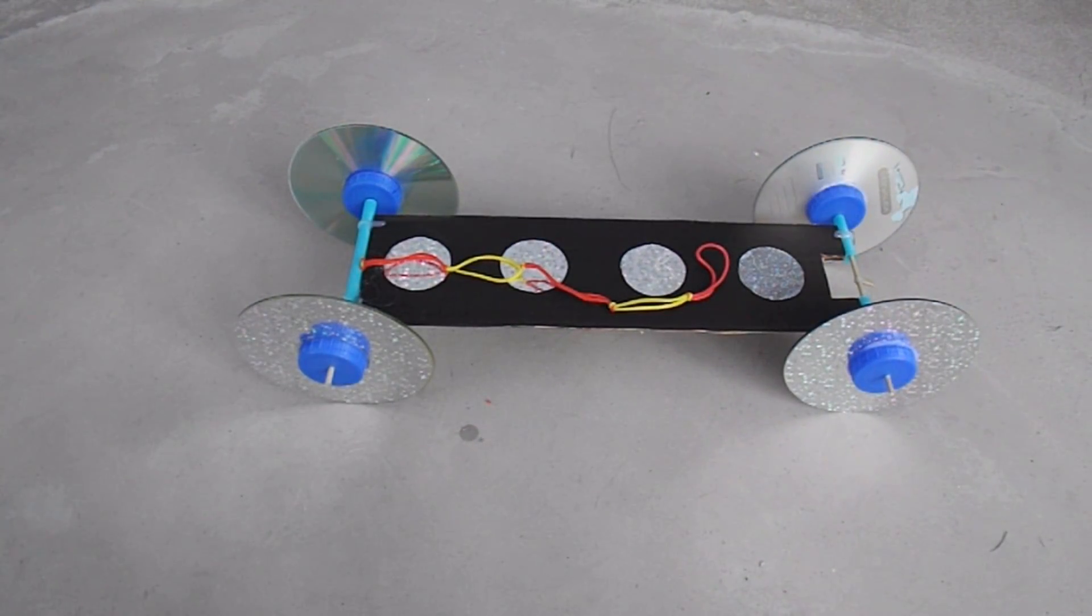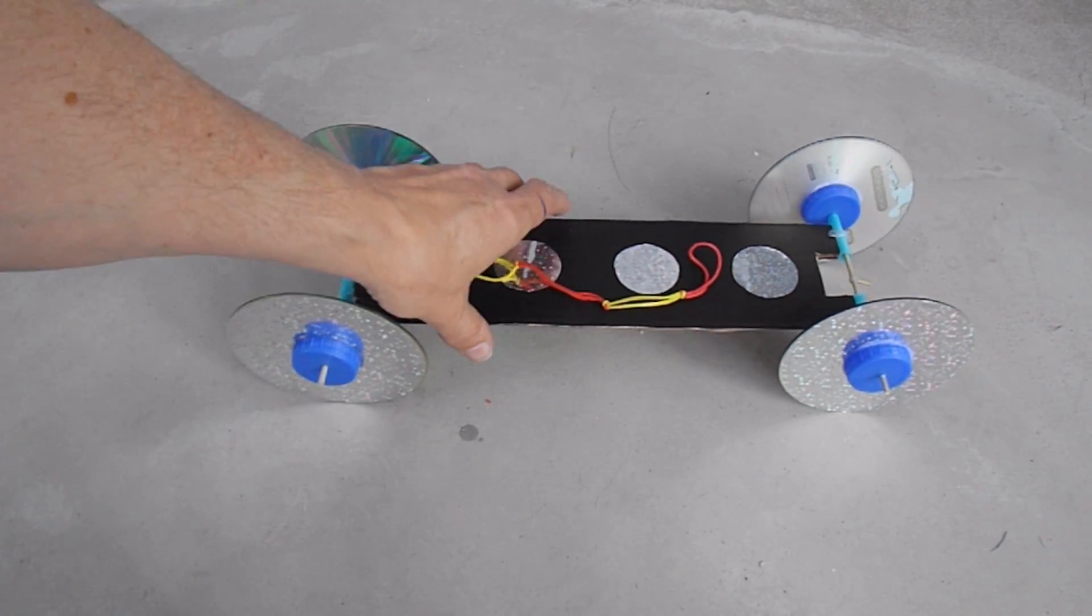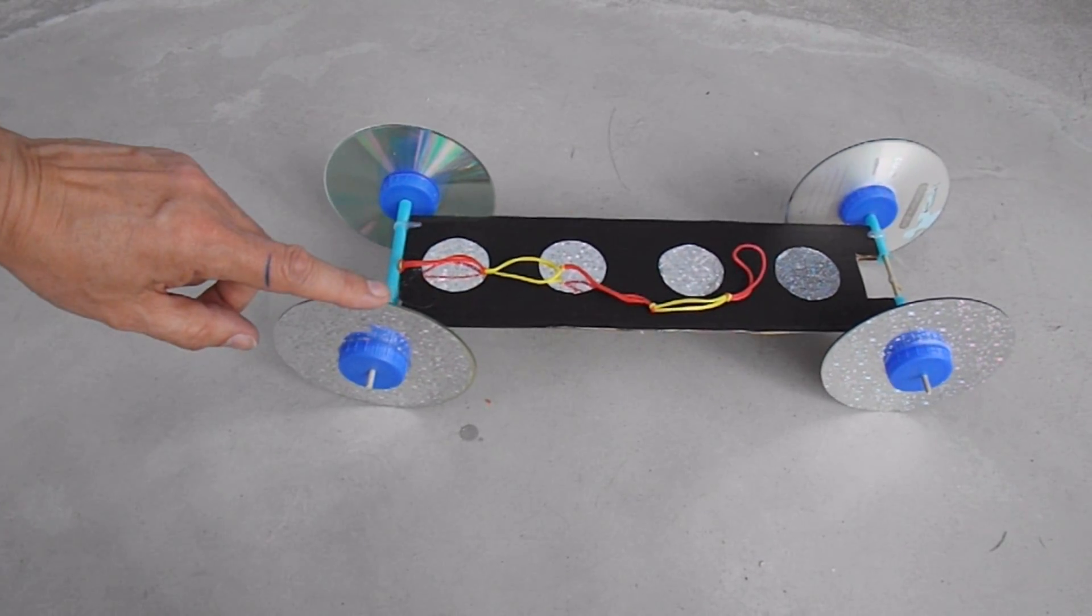Quick summary. What have we got? We've gone right back to basics here. A very simple rubber band powered car made from cardboard, CD wheels,